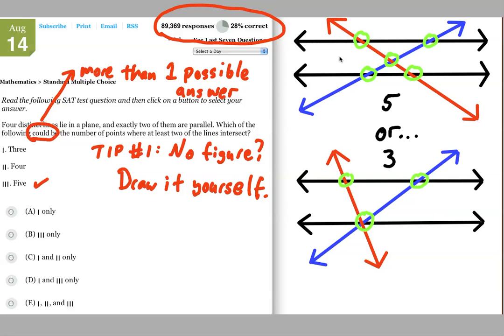And, you know, no matter how hard you try, you're not going to find four points of intersection, right? So, we can kind of go down the list here. It's not going to be one only. It's not going to be three only. It's not going to be one and two only because two is not true.